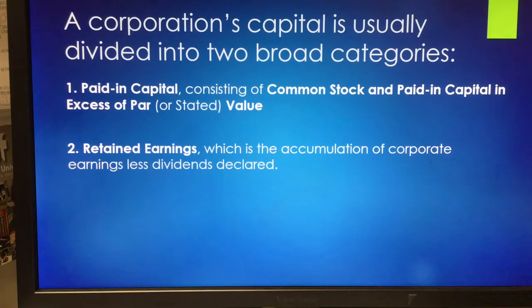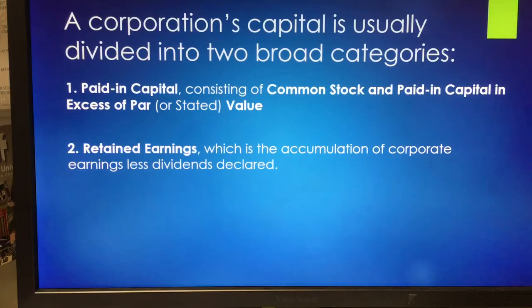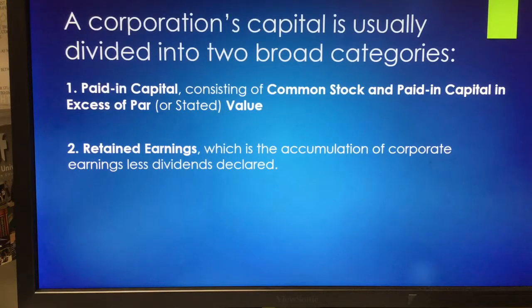When a company generates a dollar of profit, there are two and only two things they can do with it: distribute those profits to the owners as dividends, or retain those earnings in the company. That doesn't mean they're sitting on a pile of cash — since cash is a low-earning asset, companies will turn those profits into more inventory, equipment, or pay off debts. Keep in mind that retained earnings does not represent cash.